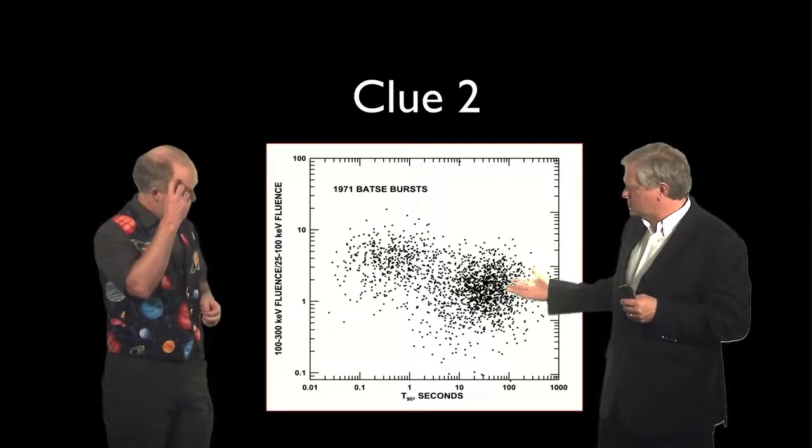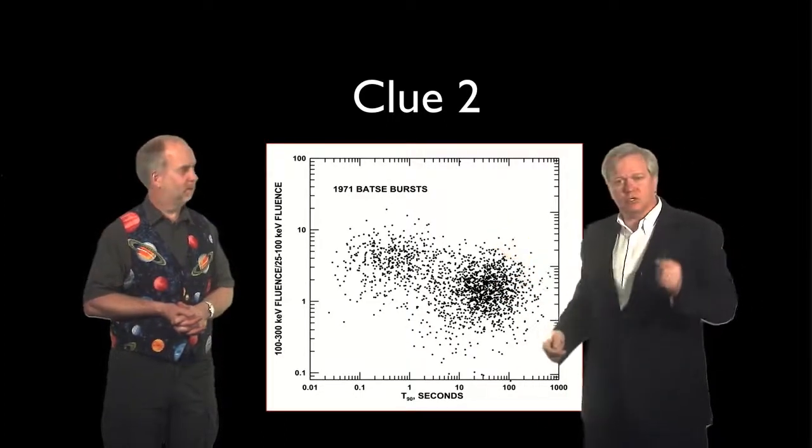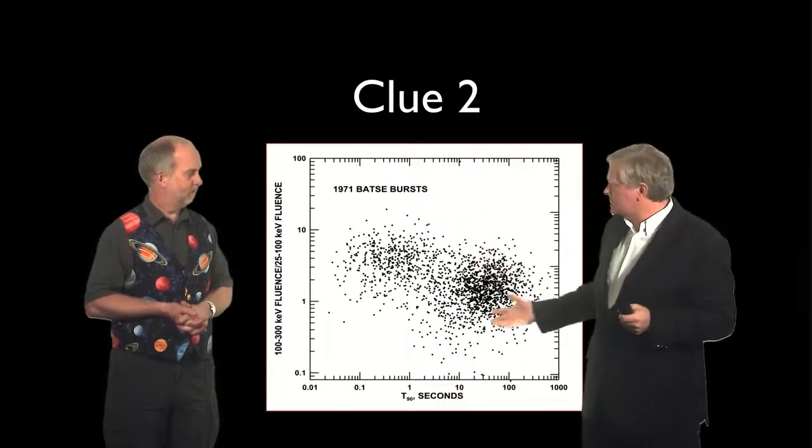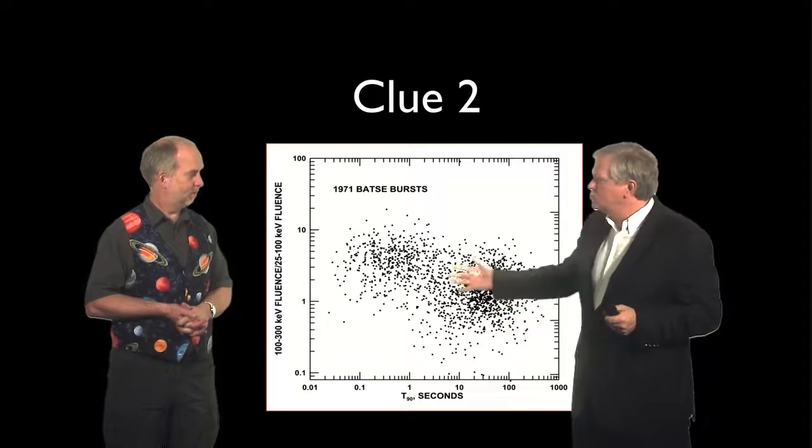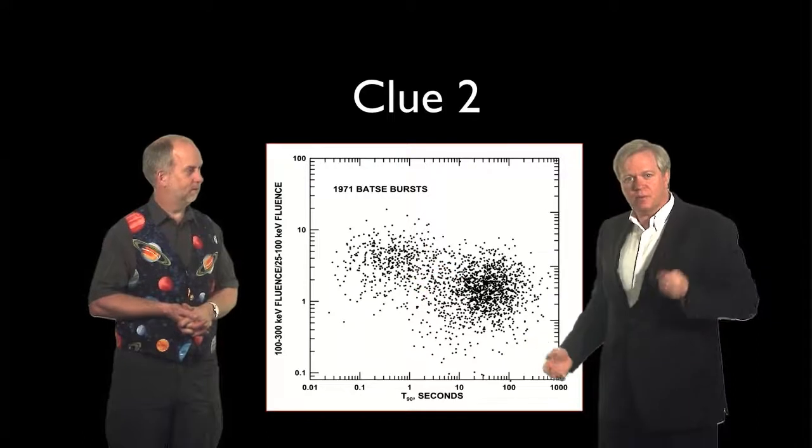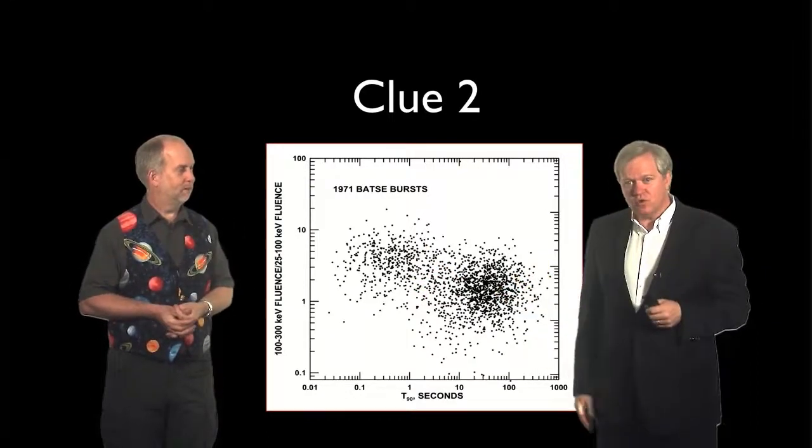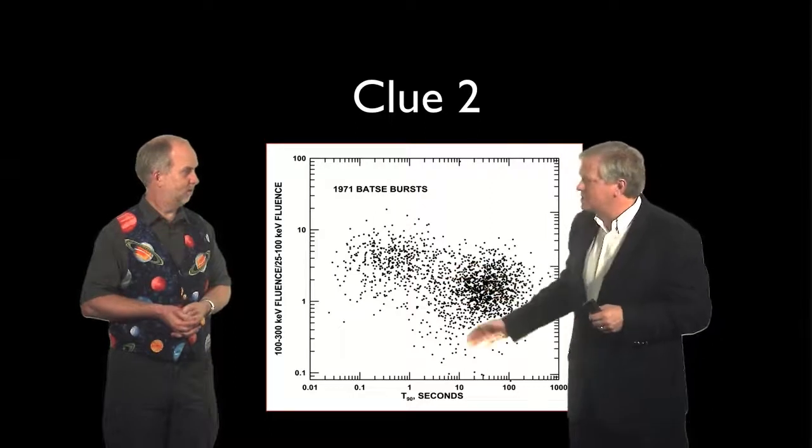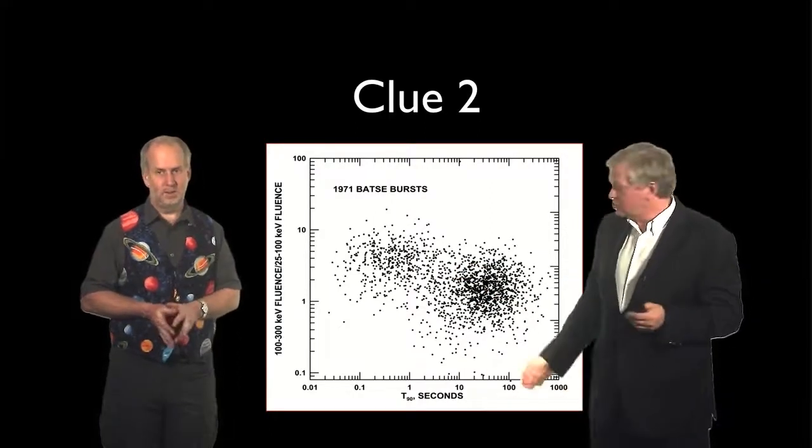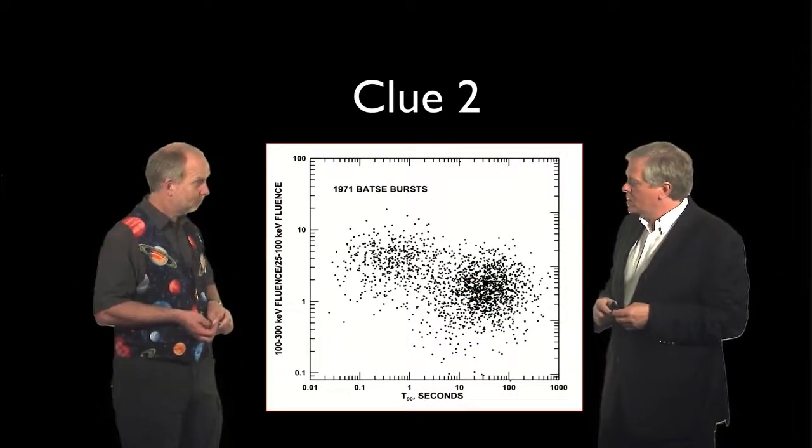So the analogy here is imagine I went out and I took the human population and I measured their height and their weight and I plotted it like this. You could imagine that you get potentially two clouds because the human population is made up of men and women. Now, it turns out if you do that, it's a bit of a blur because men and women aren't that different. They're certainly not as different as these gamma ray bursts appear to be. Whatever they are, there are two of them.